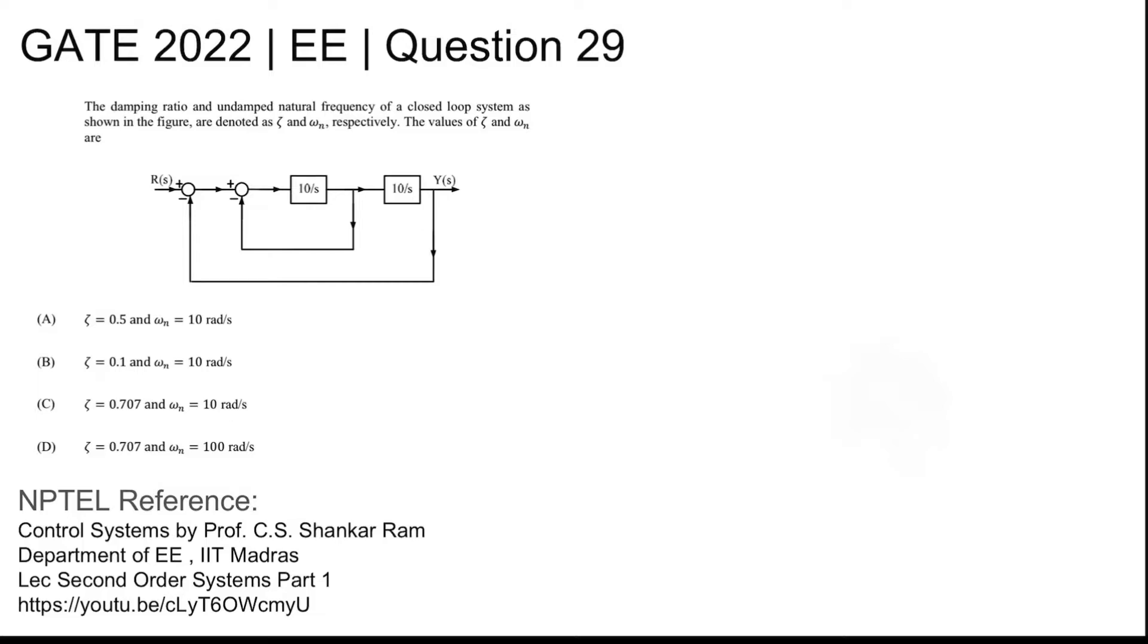The values of zeta and omega n are: four options are given. The NPTEL reference you can refer to is lecture on second order systems part one of the NPTEL course Control Systems by Professor C.S. Shankar Ram, Department of Electrical Engineering, IIT Madras.